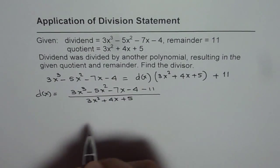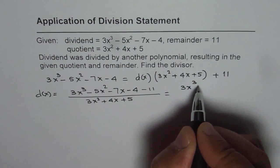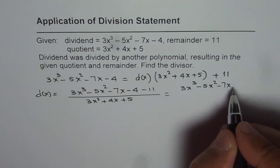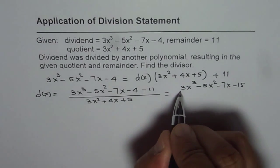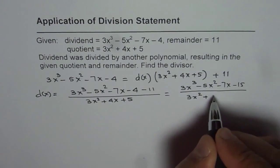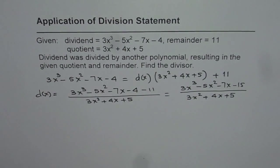So what we get here is 3x cube minus 5x square minus 7x minus 15 divided by 3x square plus 4x plus 5. Now to get the value of divisor, we can divide.